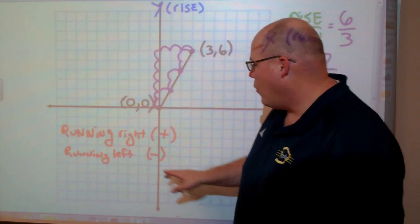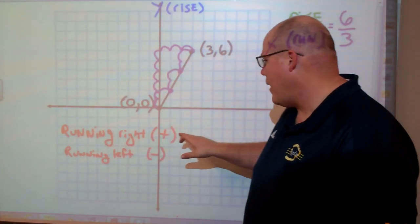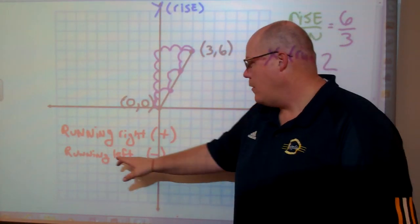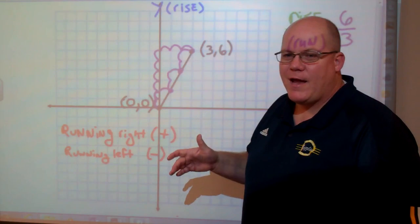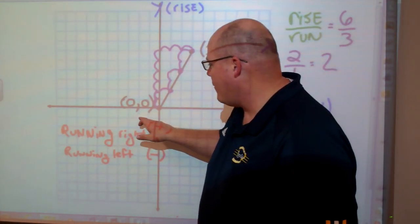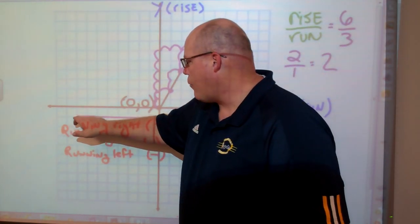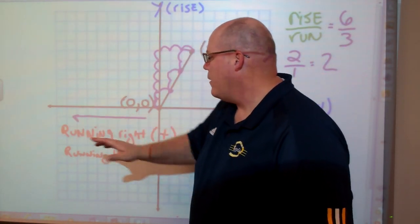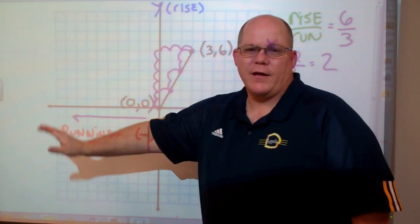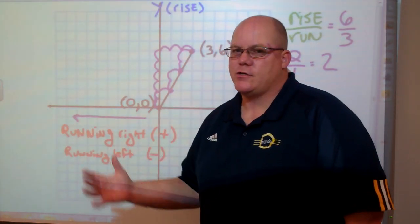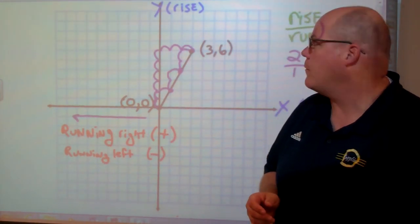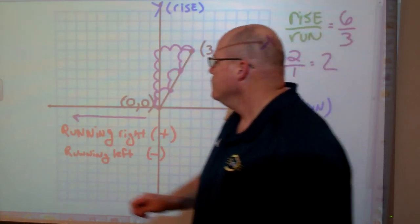Now, when we're running to the right, we have a positive number. When we're running to the left, we have a negative, because we'd be moving in a negative direction on the number plane, as opposed to moving in a positive direction. I'll show you what that looks like with another example.